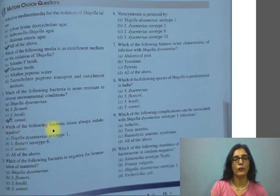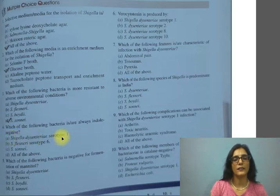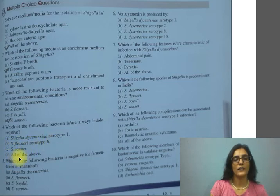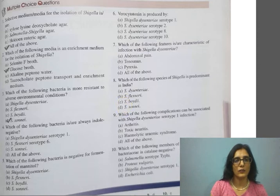Fourth question: which of the following bacteria is always indole negative? Option A is Shigella dysenteriae serotype 1, B is Shigella flexneri serotype C, C is Shigella sonnei, and D is all of the above. The correct option is C, Shigella sonnei.